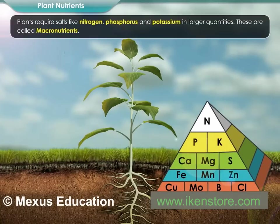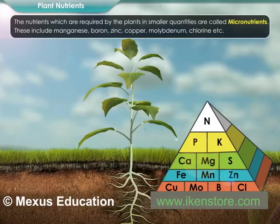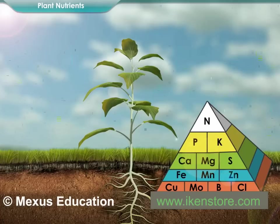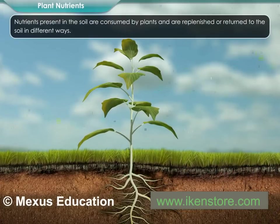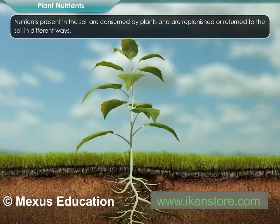Plants require salts like nitrogen, phosphorus, and potassium in larger quantities; these are called macronutrients. Nutrients required by plants in smaller quantities are called micronutrients, and these include manganese, boron, zinc, copper, molybdenum, chlorine, etc. Nutrients present in the soil are consumed by plants and are replenished or returned to the soil in different ways.